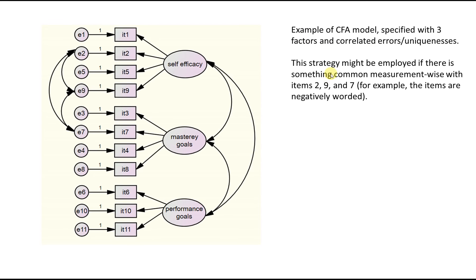This is an example of another CFA model — basically an elaboration where I have correlated errors. In certain circumstances it might be wise to do that. For instance, if there are method effects associated with the items, such as items 2, 9, and 7 being reverse-coded while all others are positively worded, the reverse coding might introduce a method artifact. Correlating the measurement errors can potentially capture that method artifact.